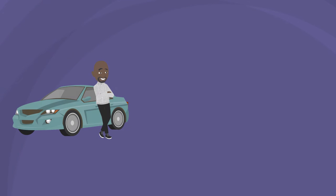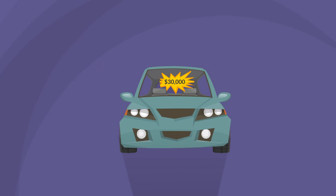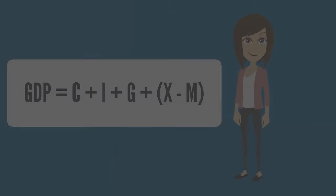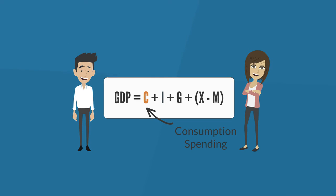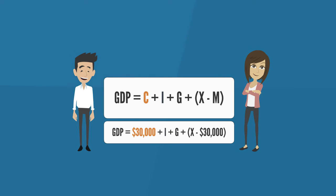Here's an example. Let's say you buy a car produced outside the U.S. and that car cost $30,000. When you bought the car, it was added to GDP as C, or consumption spending. Then, because it was imported, the $30,000 is subtracted, so they cancel each other out. The net effect of buying an import is no change in U.S. GDP.